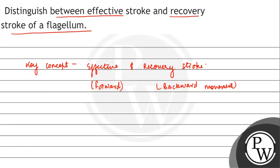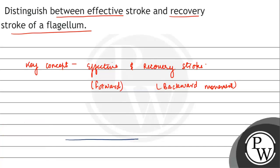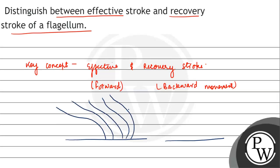Let us look at this in diagrammatic form. Suppose this is the body of the Euglena, because in Euglena we generally see a flagellum. So it will be moving in this direction — in the left hand side direction — and this is called the effective stroke.